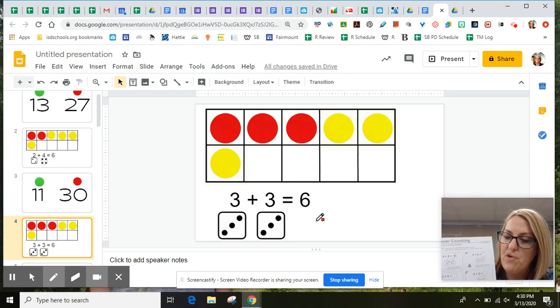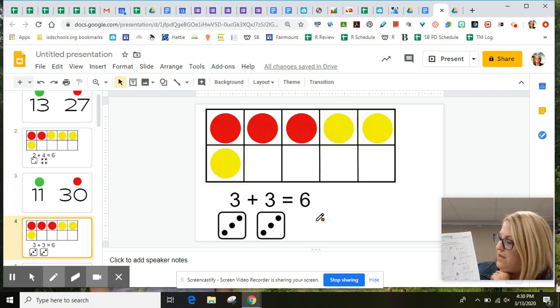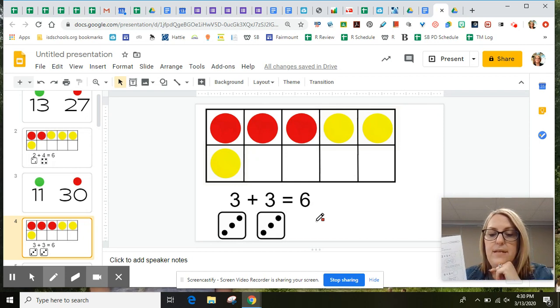Now, when you go to do your practice today, you'll see the very first one is three and three is the same as six. Your next one says two and five is the same as, hmm. Let's see if you can figure it out.